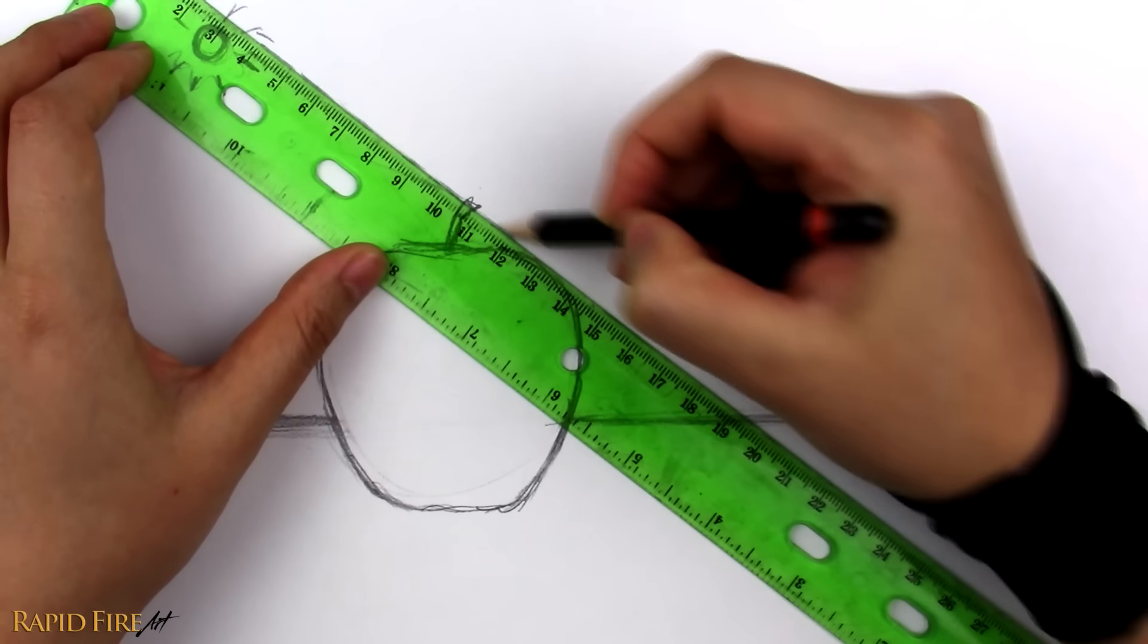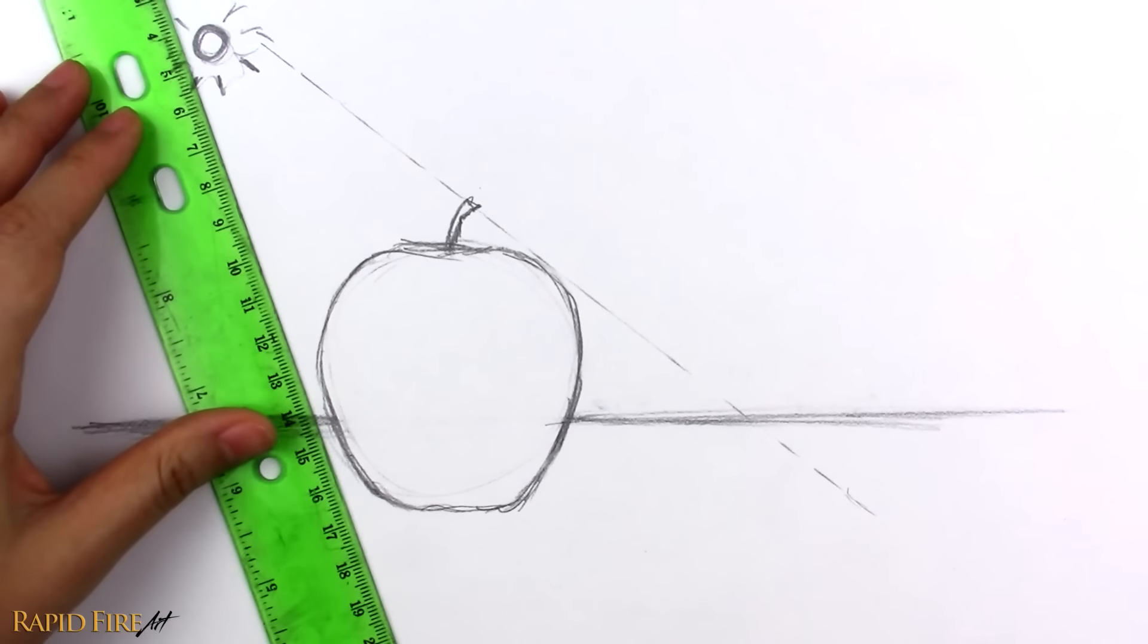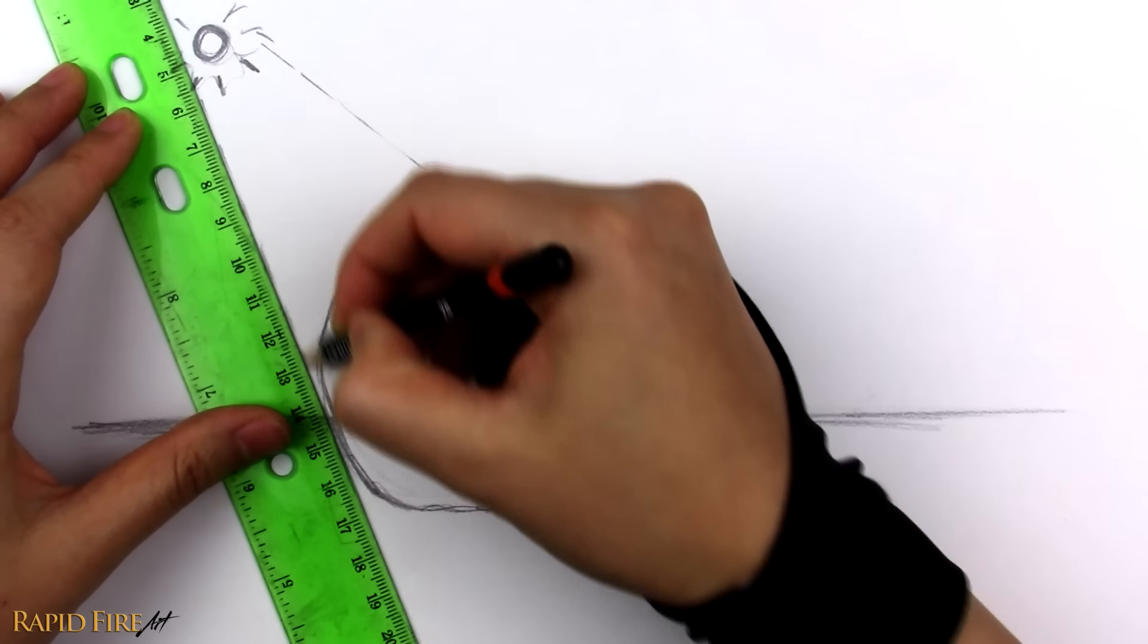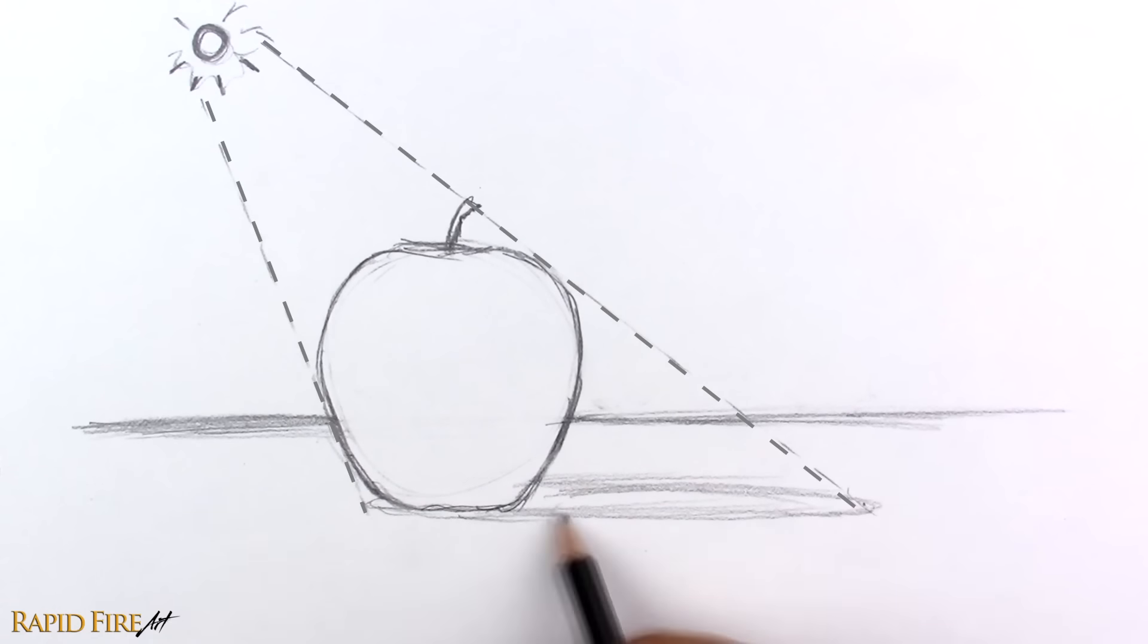You can use a ruler to find the cast shadow's length. Just align it to your light source and the edge of the apple. Now we know how long to draw the cast shadow. I'm just going to draw a long oval shape.